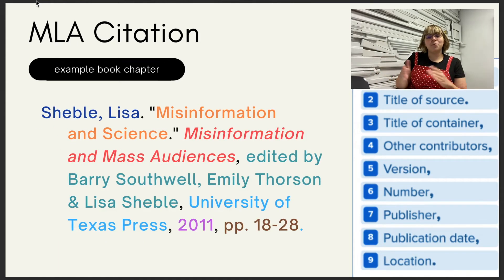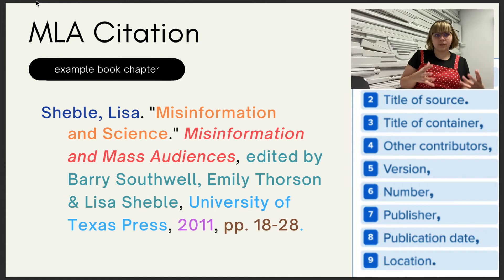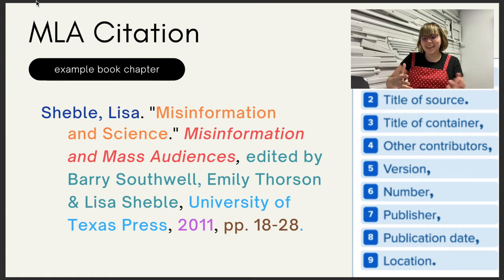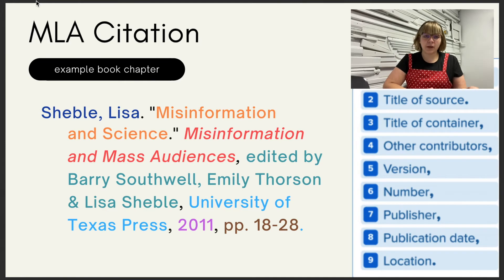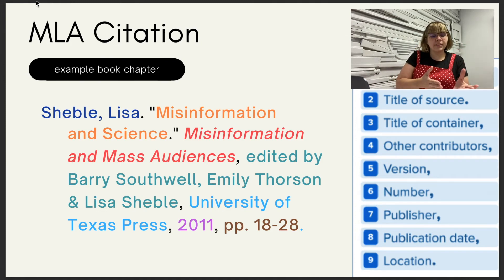So for a book chapter — a book chapter citation is very similar to a journal article. You have the author's name, then the title of the chapter you're citing: 'Misinformation and Science.' Then the book it comes from: Misinformation and Mass Audiences. Then the editors of the book — Barry Southwell, Emily Thorson, and Lisa Schiebel — then the publisher, University of Texas Press, date, and the page range as location. You only create this type of citation if each chapter has an individual author. If the whole book is by a single author, just cite it as a regular book.